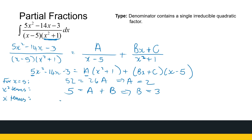Now I need to get c. I see c has an x term, so I look at the x terms. On the left-hand side I've got minus 14x. On the right-hand side there are no x terms in the first part. From the second part I get minus 5bx plus cx. So c equals minus 14 plus 5b. With b equals 3, c will be 1. So I've got a, b, and c, and now I can go on with the integration.